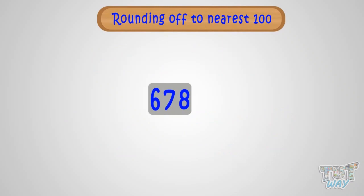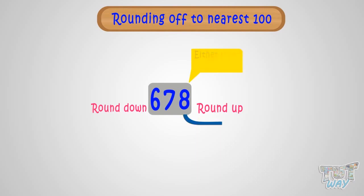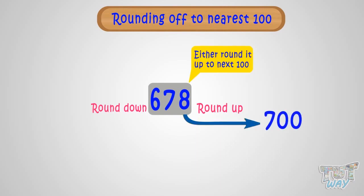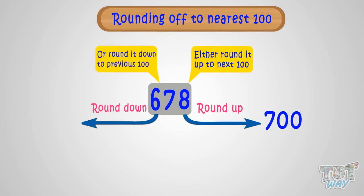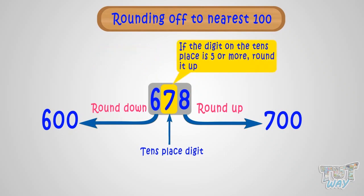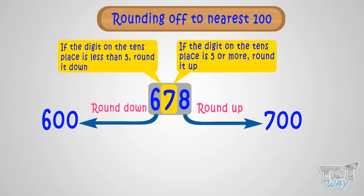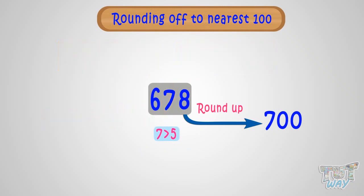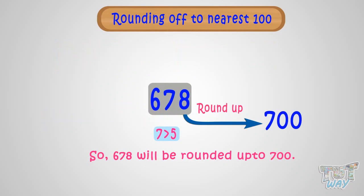Now let's round 678 to the nearest hundred. Here again we have two options — either round the number up to the next hundred, that is 700, or round it down to the previous hundred, that is 600. It depends on the digit at the tens place. If the tens digit is five or more, we round it up; if less than five, we round it down. Here the tens digit is more than five, so the number will be rounded up to the next hundred, that is 700.